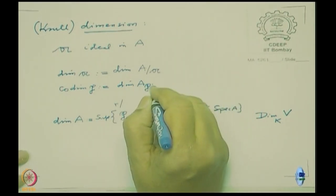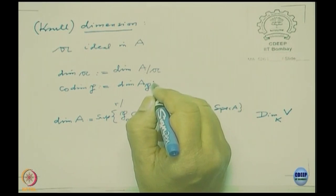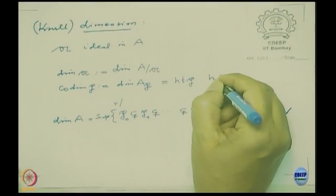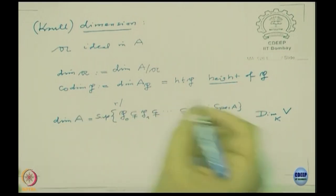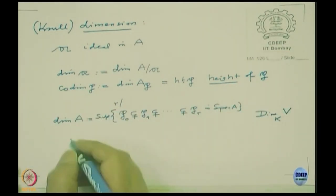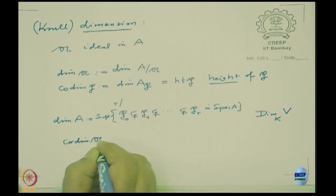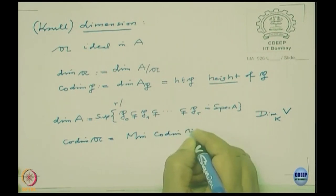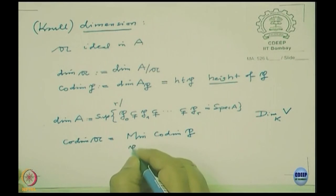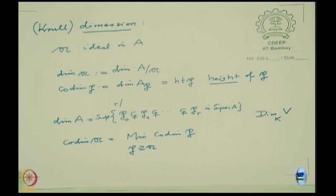When you localize, prime ideals not contained in p become unit ideals. This is also called the height of p, denoted ht(p). Once defined for prime ideals, codimension of an arbitrary ideal a is the minimum of codim(p) over all prime ideals p containing a.